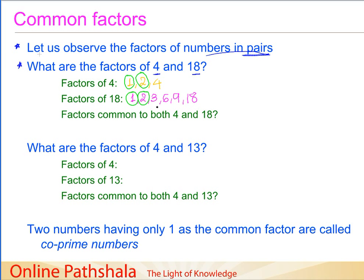Do we have any other common number? We have 3, 6, 9, 18, 4 — but what are the factors common to both 4 and 18? They are the numbers 1 and 2. These two numbers, 1 and 2, are called the common factors for both 4 and 18. Common factors are simply the factors which are common for two numbers — a very basic and important concept.